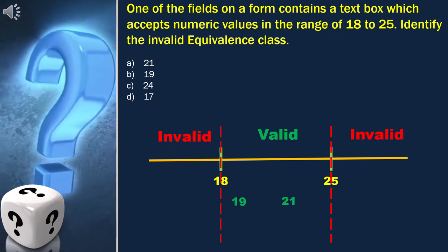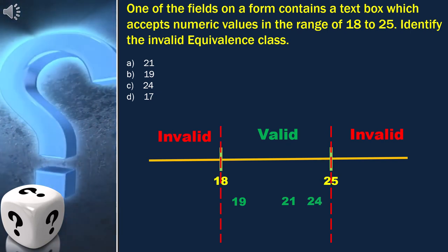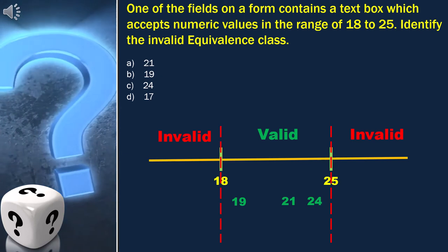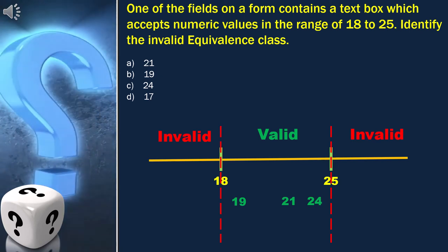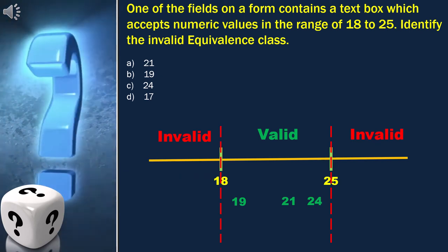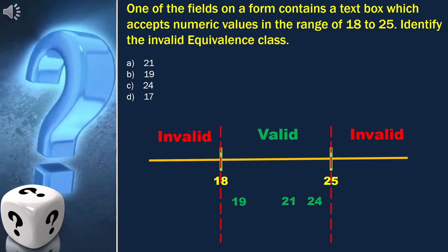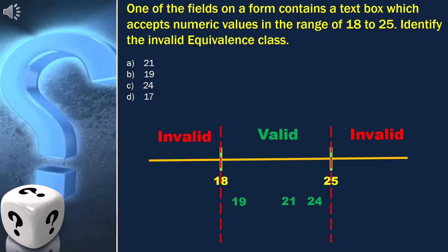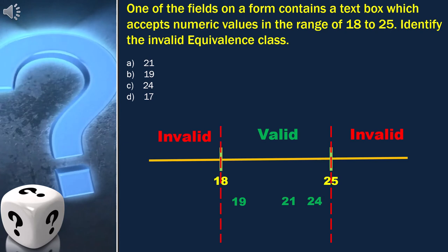Next option is 24, and we can place it here which is also a valid value. So 21, 19, and 24 are the valid values.